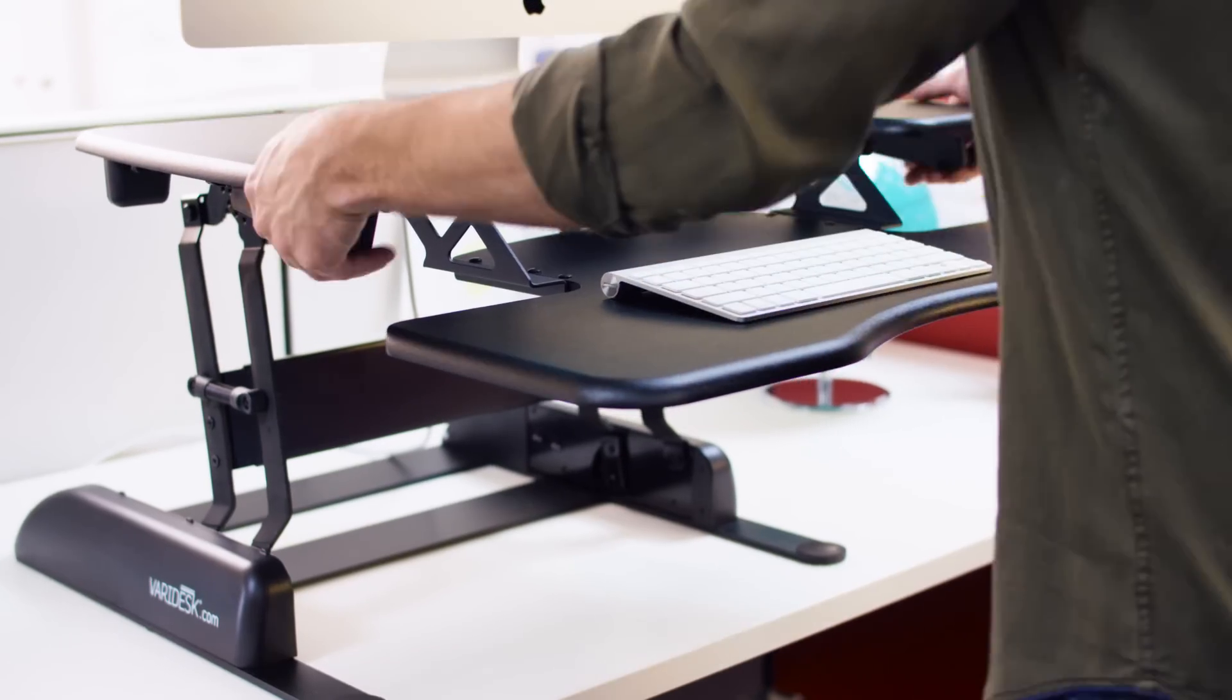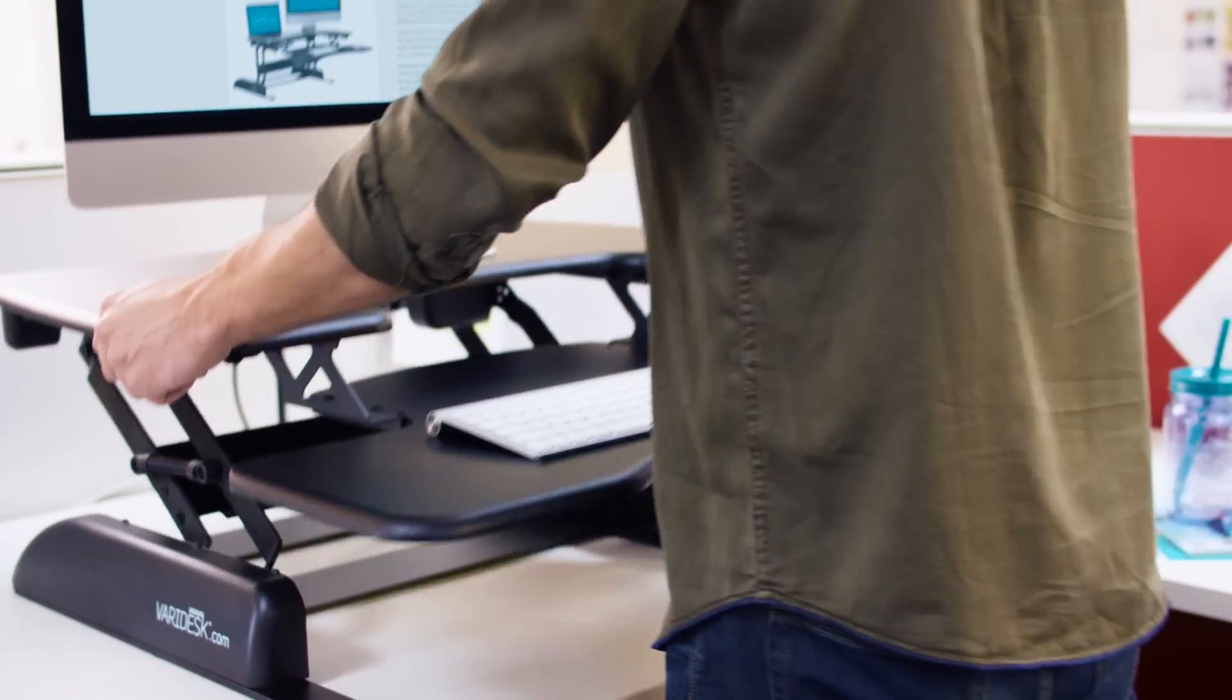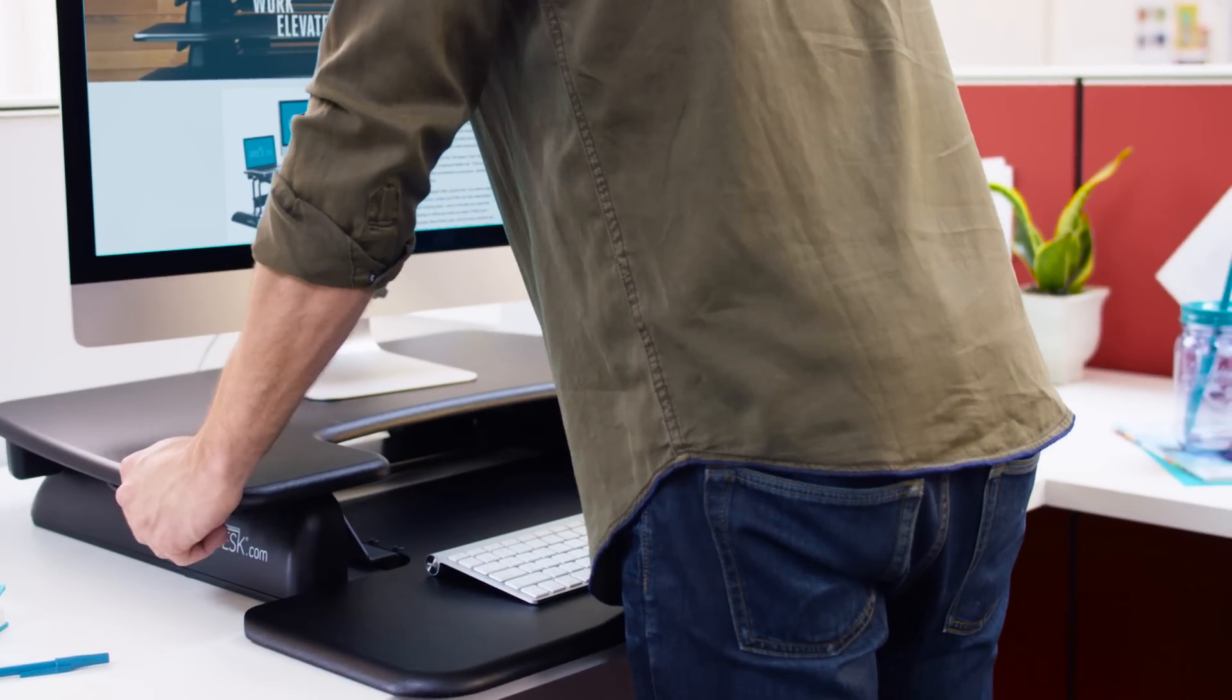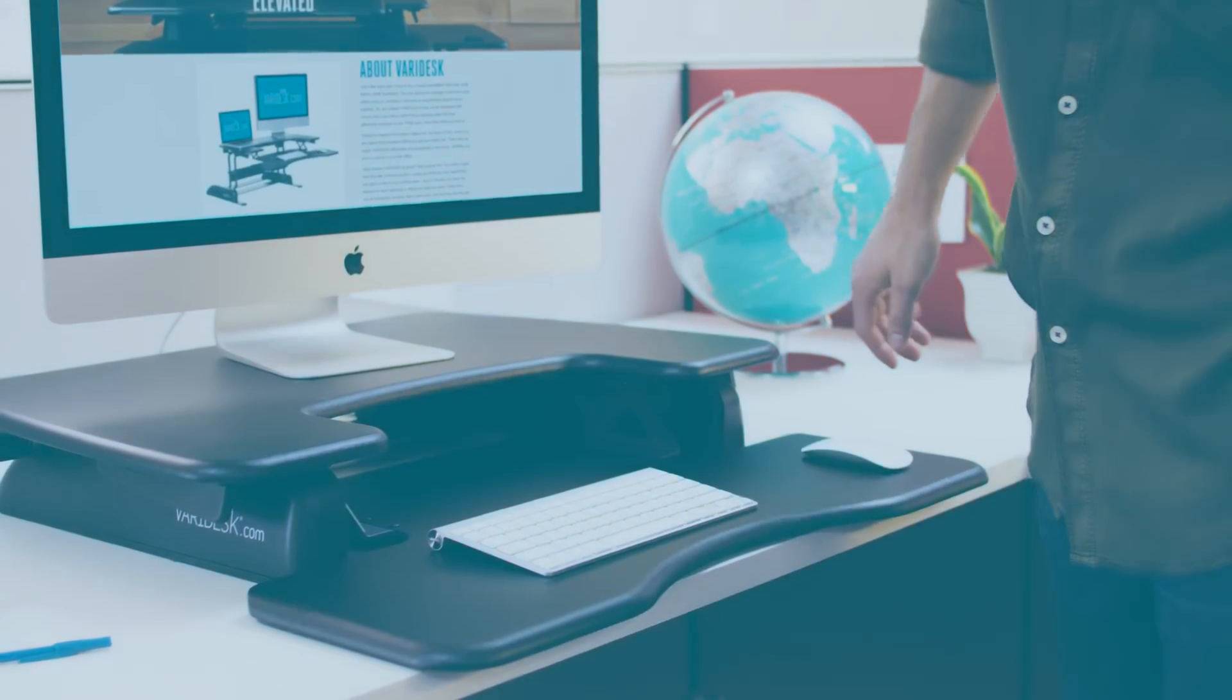The Pro Plus 30 comes fully assembled so it's ready to use right out of the box. Just place it on top of your existing furniture and you're ready to work.